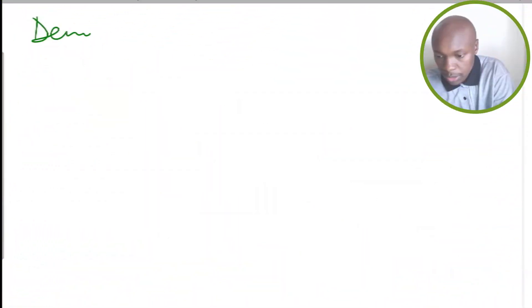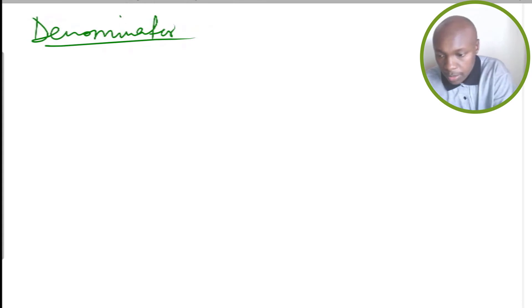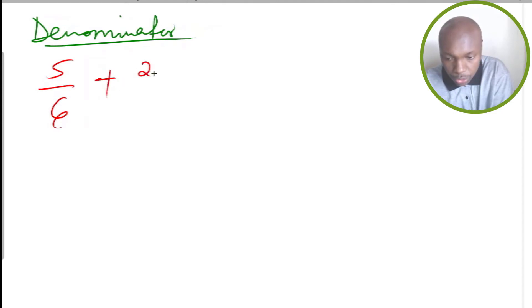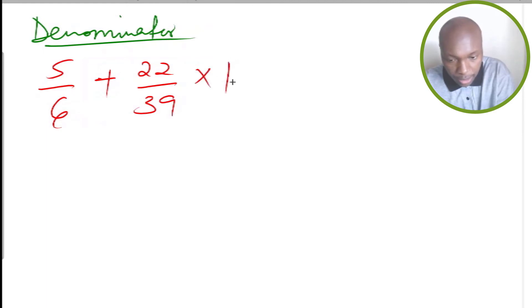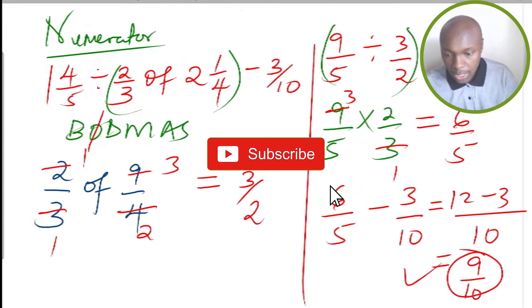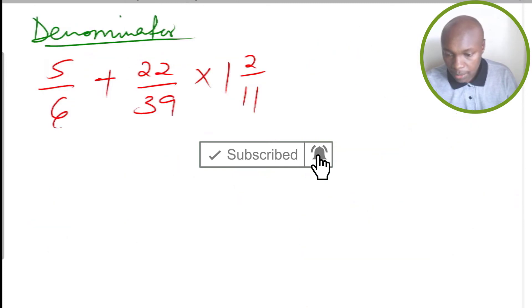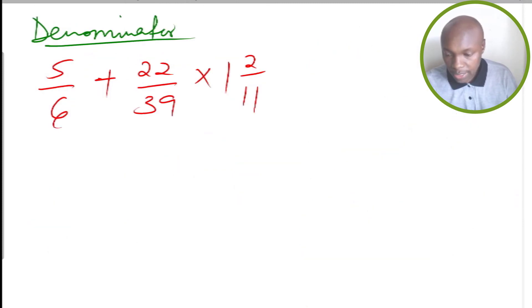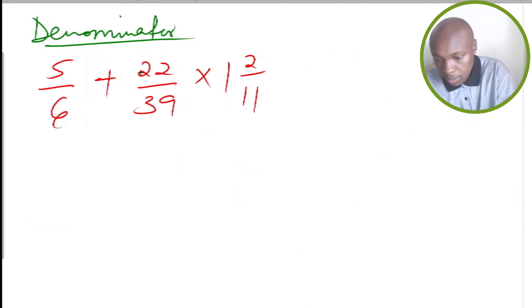Now let's go to the denominator. For the denominator we have 5 over 6 plus 22 over 39 multiplied by 1 and 2 over 11. Here we have two operations: addition and multiplication. According to the rule of BODMAS, multiplication should come before addition, so we will work out the multiplication first.